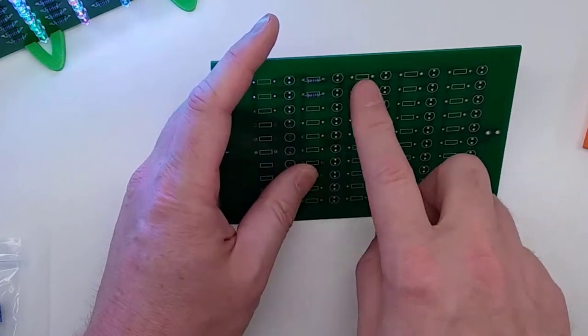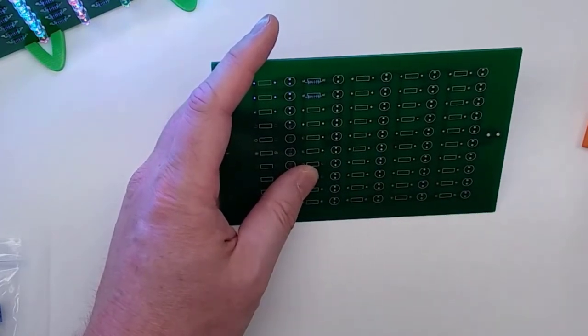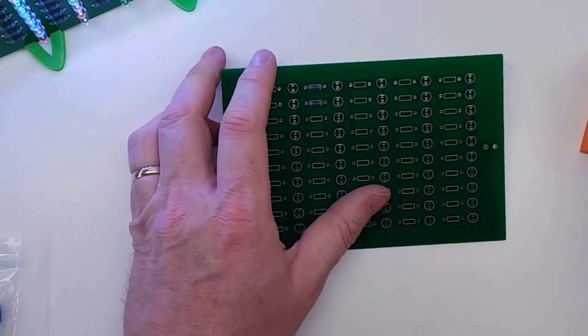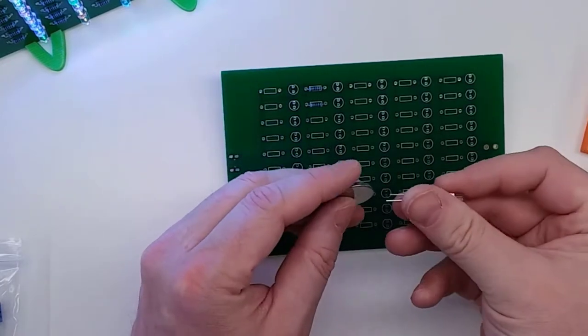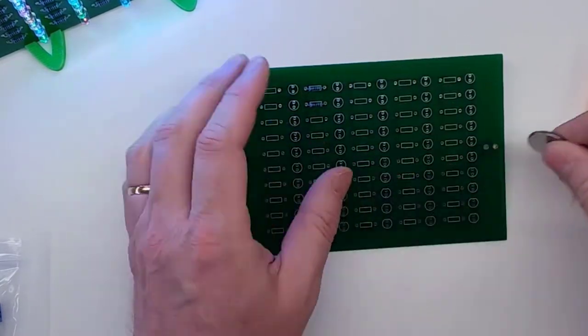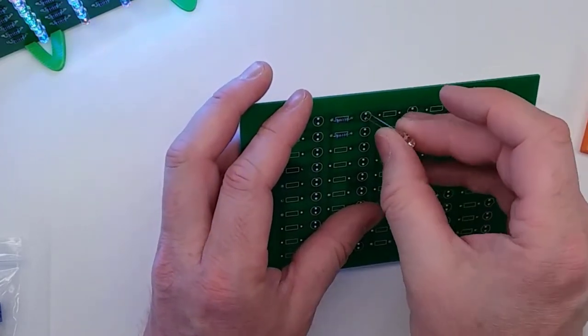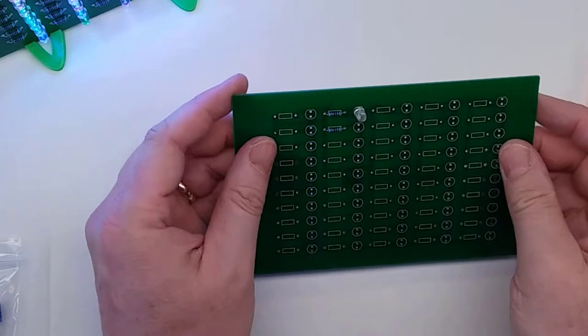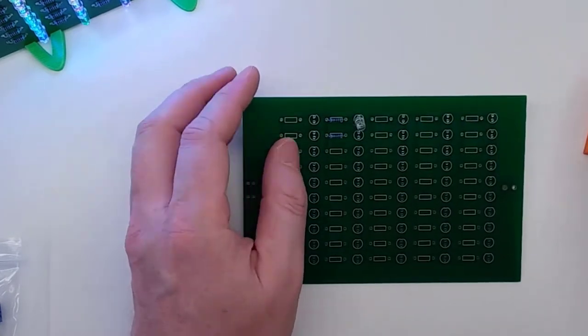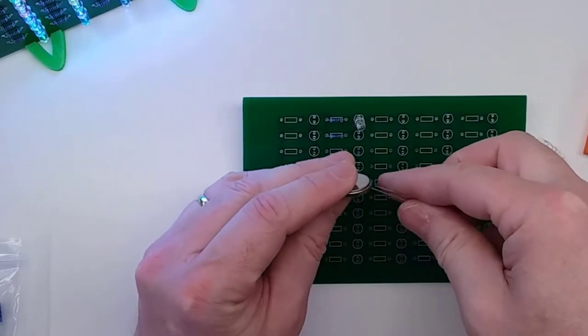After you've soldered in all of the resistors you can now move on to the LEDs. Again we want to test each of these LEDs before we put them in so we're just going to verify that they light, and then we're going to put them in with the short lead on the flat side. We're going to push it all the way down to the bottom of the board and again we're going to test the next one and we're going to continue this process.